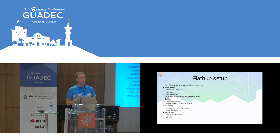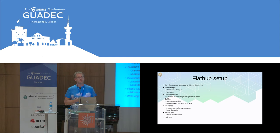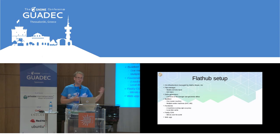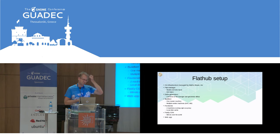We have frontend machines that are basically Nginx mirrors or proxies for flat-manager, which offloads a bit by having a disk cache. That's where all the CDN talks to — the Fastly nodes download from the frontend, which in turn downloads from flat-manager itself. We also have a web app that basically scrapes the repo and generates web pages for all the apps with all the app data.